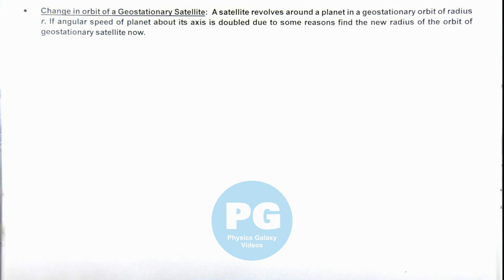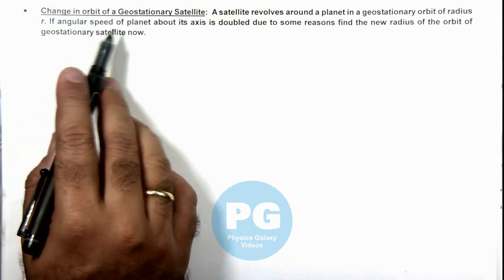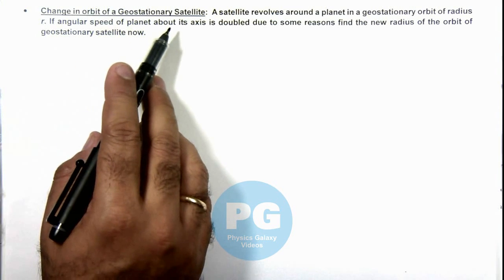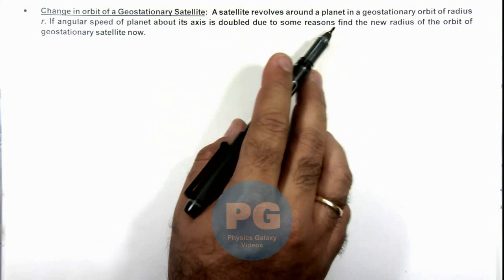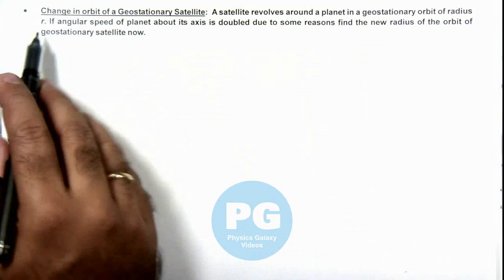In this illustration we are going to discuss the change in orbit of a geostationary satellite. The situation is given as a satellite revolving around a planet in a geostationary orbit of radius r.